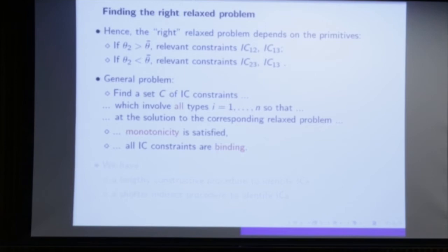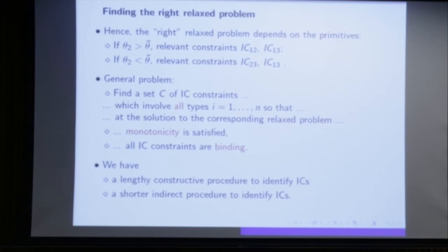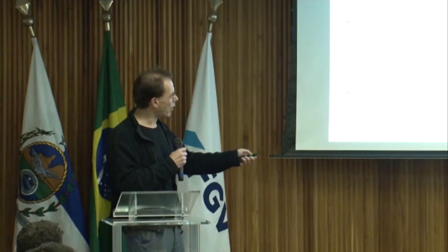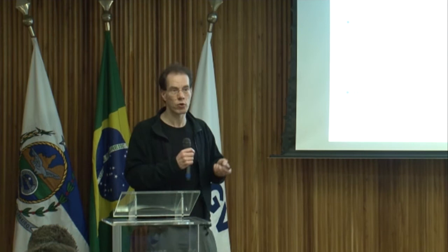The general problem is to find a subset C of incentive constraints such that when we solve the relaxed problem using only those constraints, monotonicity is satisfied and the chosen constraints are really binding. We call a set C 'directed' if whenever IC(I,J) is in C, there is no K such that IC(K,I) is also in C — in other words, if I likes to be J, there is no K who likes to be I. The directed property ensures we end up with virtual surplus terms that are either all positive or all negative, avoiding the sign-conflict problem.